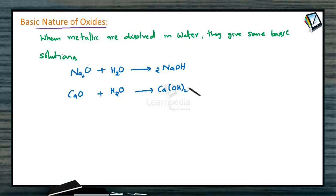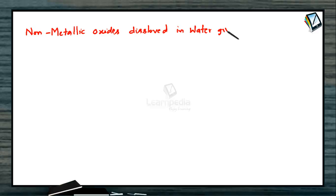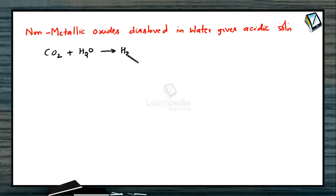But some nonmetallic oxides, when dissolved in water, give acidic solutions — their corresponding water solutions have acidic nature, so those come under nonmetallic oxides. Nonmetallic oxides dissolved in water give acidic solutions. Take a simple example: carbon dioxide, when dissolved in water, forms carbonic acid, H2CO3.